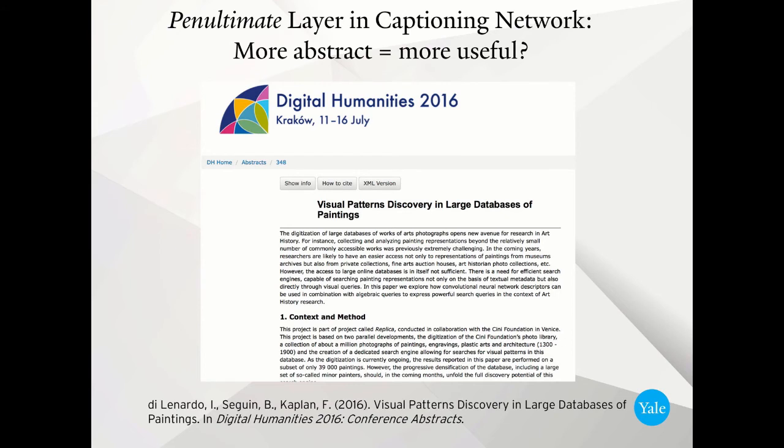We've been really inspired by a paper that came out in DH Krakow in 2016, given by Benoit Sagan and a couple other European researchers who were presenting a particular case study on the Cheney archive of art photography. The main claim in their paper is that the semi-final layer of these convolutional neural networks for image captioning, that is to say the layer before the final layer with labels, might actually be more useful for certain types of digital art history than the final labeling layer, which tries to decide whether something is a cat or a dog.